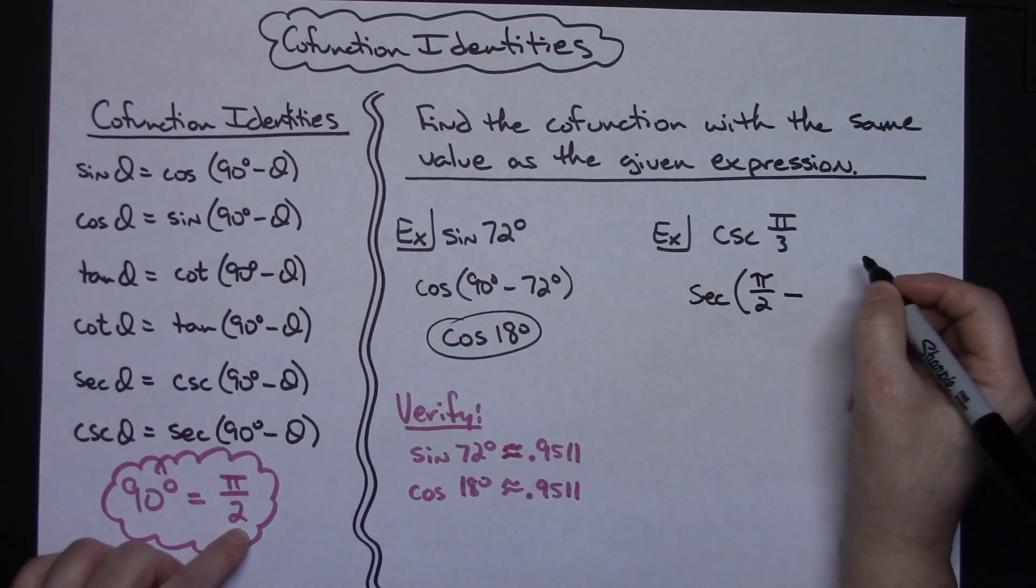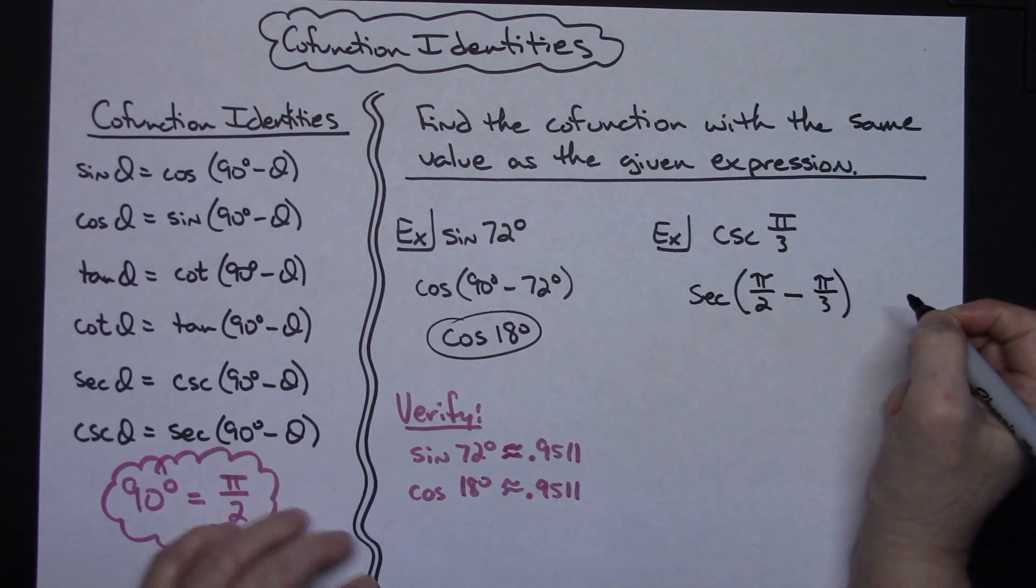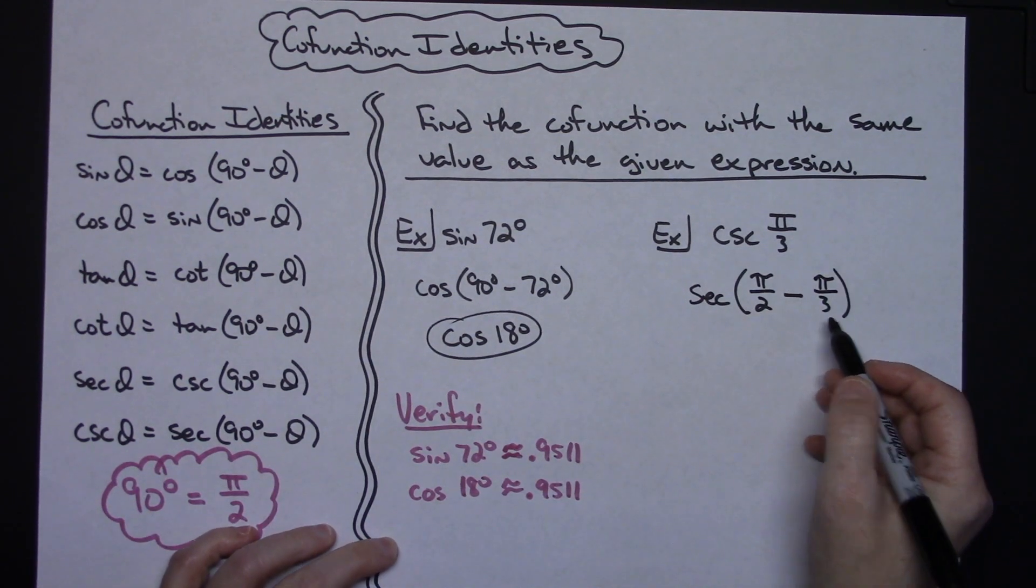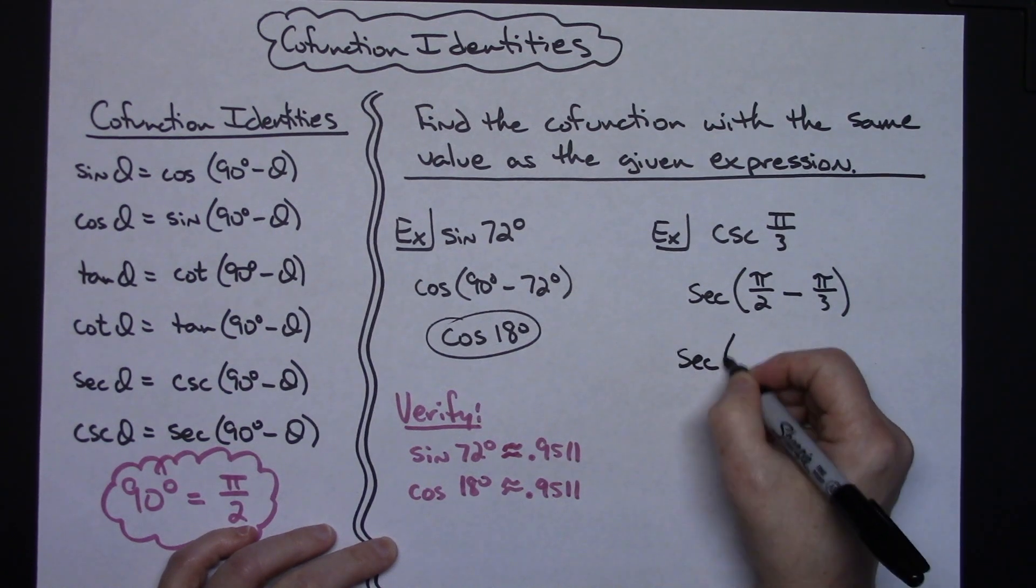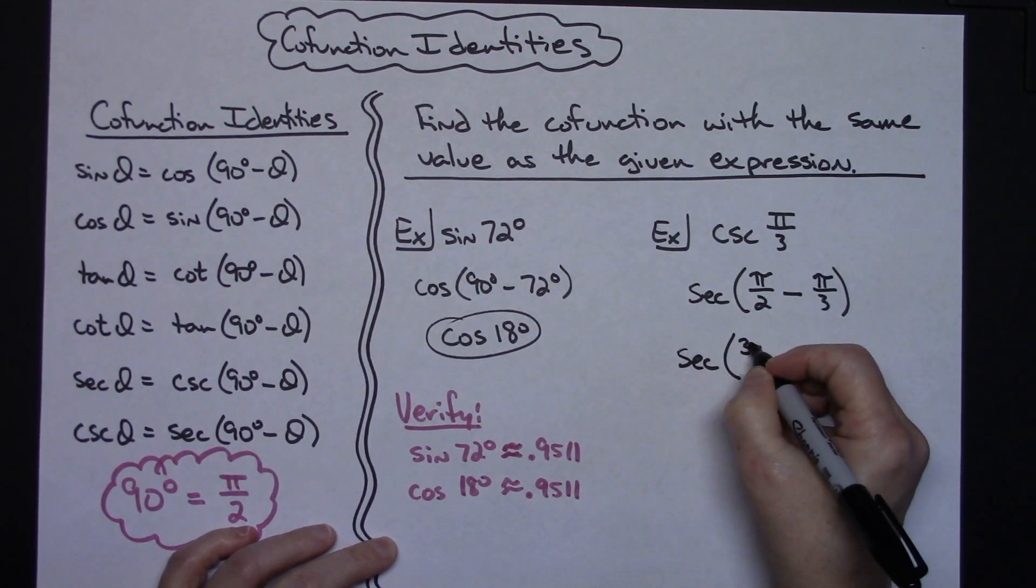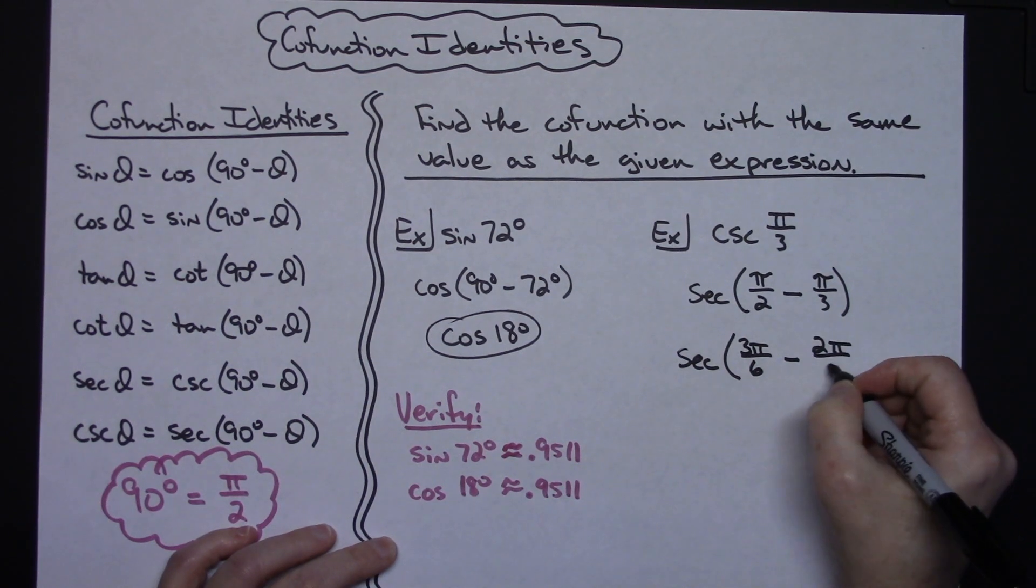I'm going to do secant of pi over 2 minus whatever my theta is, which is pi over 3. At this point if you're doing this by hand you would want common denominators in there, so secant of 3 pi over 6 minus 2 pi over 6.